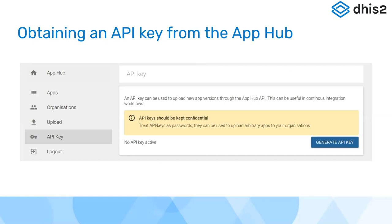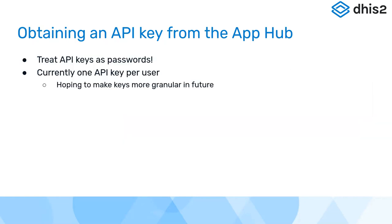Before we discuss these tools, I'd like to talk about the new API key screen of the App Hub. If you go on the sidebar, you should see an API key section which will invite you to generate your own API key. You can then use it to talk to the App Hub. This API key should be treated as a password — each App Hub user gets their own API key, and that key lets you do pretty much anything you can do through the web interface. Because of the power that comes with it, please treat these keys as passwords.